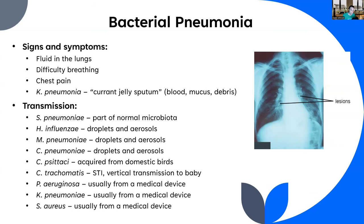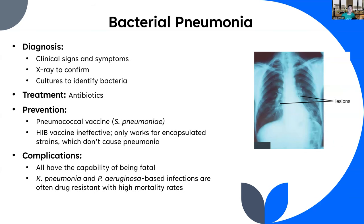Diagnosis involves clinical signs and symptoms, usually followed up with a chest X-ray, and then sputum cultures — because you want to know what you're dealing with given the wide array of bacteria that can cause this. Treatment will be antibiotics in all cases, but which antibiotic matters. For example, Pseudomonas aeruginosa is resistant to many antibiotics, so you won't treat it the same way as pneumococcal pneumonia.